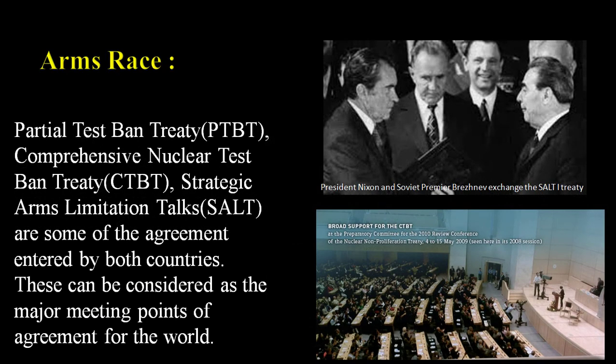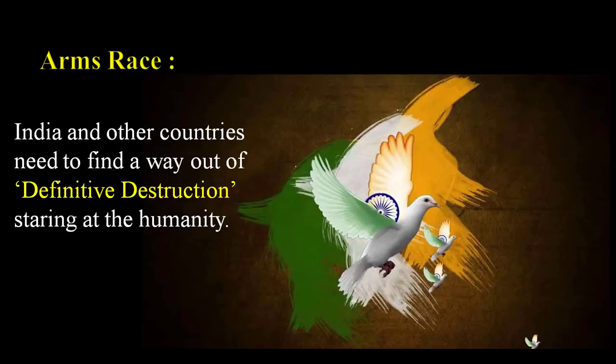Some very important bilateral agreements include: PTBT — Partial Test Ban Treaty; CTBT — Comprehensive Nuclear Test Ban Treaty; and SALT — Strategic Arms Limitation Talks. These are agreements entered into by both countries and can be considered major milestones. India and other countries need to find a way out of the definitive destruction staring at humanity.